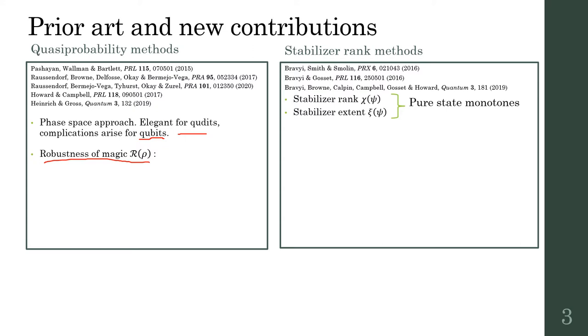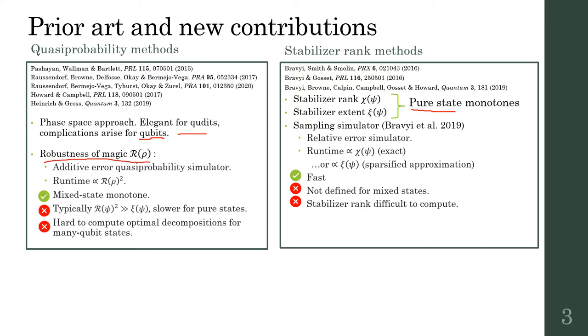On the other side, we have stabilizer rank methods, which relate to measures of magic for pure states. In particular, stabilizer rank and extent are two pure state monotones I will touch on later. Each monotone I've mentioned has been used to quantify runtime for an associated classical simulator, each with their own advantages and disadvantages.